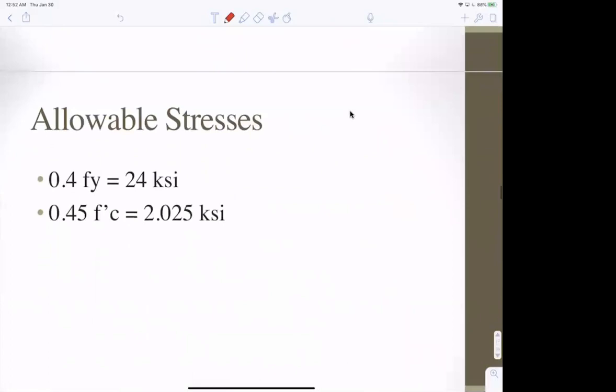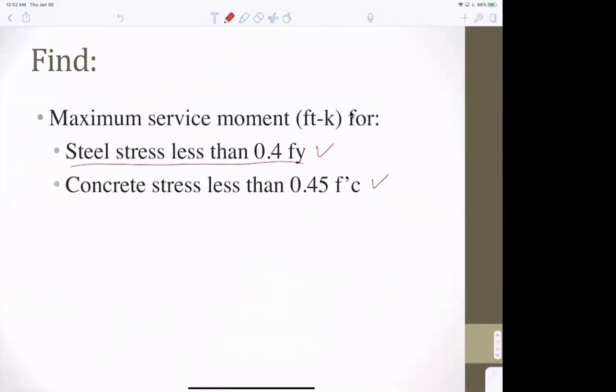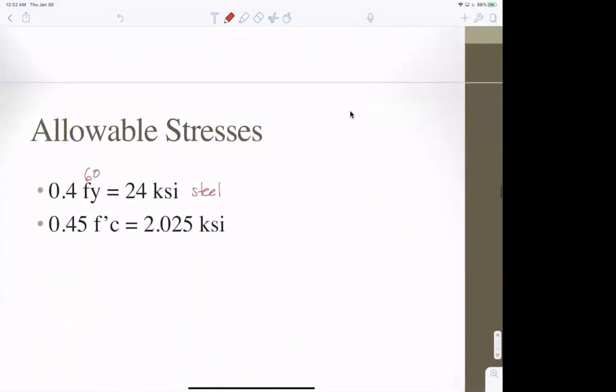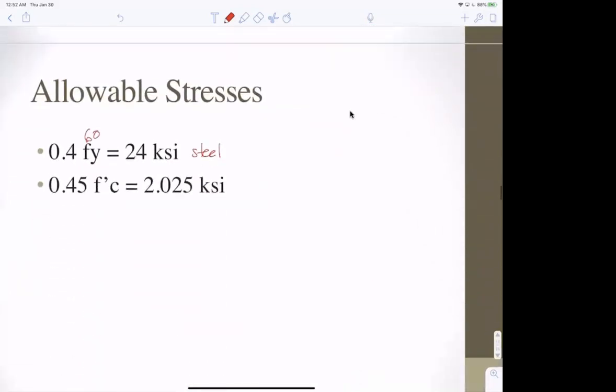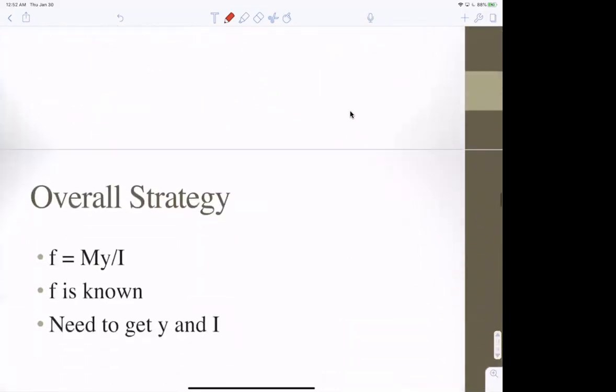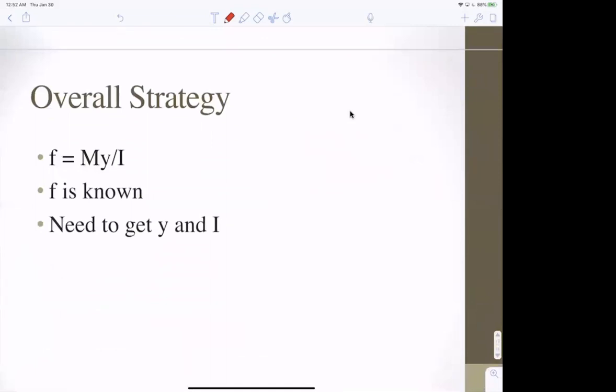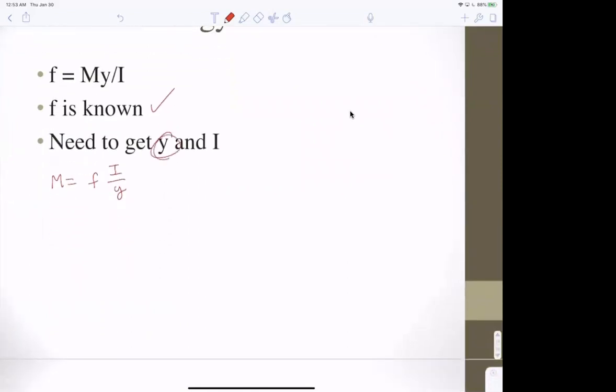The maximum service moment for getting this stress and getting this stress. Okay. So, the allowable stresses. 0.4 times 60 is 24. That's the allowable steel stress. So, going back to this, the steel stress is less than 0.4 of the yield. And the concrete stress is less than 45% of the f'c. And then the f'c was what? Again, 4,500. So, this is 4,500 or 4.5 KSI. And this is concrete. So, the overall strategy is we know the stress is MY over I. We just calculated F. So, if we could get Y and I, we could do this. M equals F I over Y. So, the goal is to get Y and I.